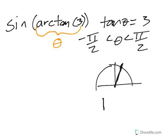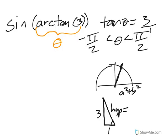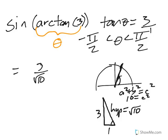Using SOHCAHTOA with a reference right triangle: if opposite over adjacent is 3, then using a² + b² = c², we have 3² + 1² = 9 + 1 = 10, so the hypotenuse is square root of 10. The reference triangle has sides 1, 3, and root 10. The sine of the angle — opposite over hypotenuse — is 3 over root 10.